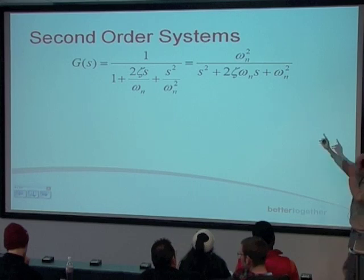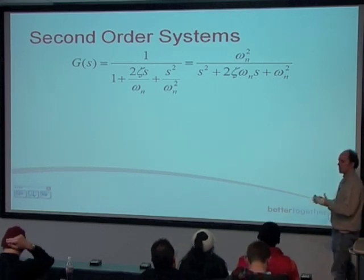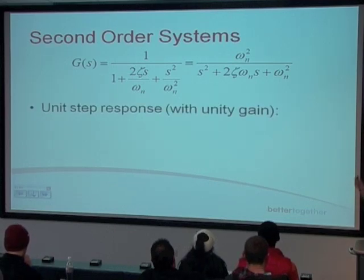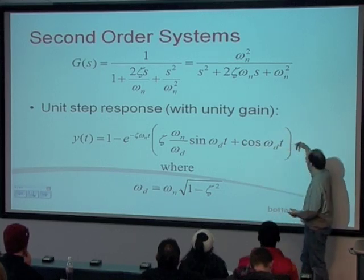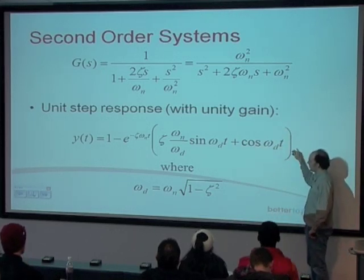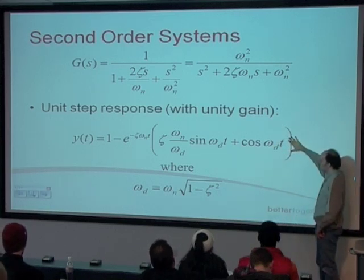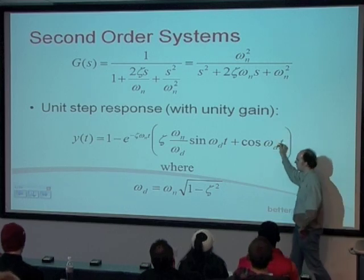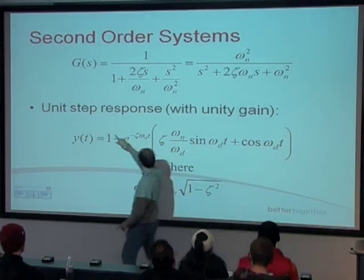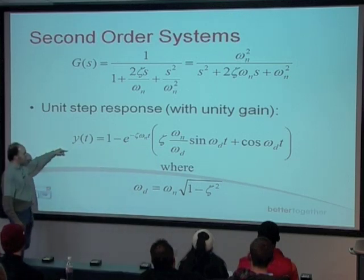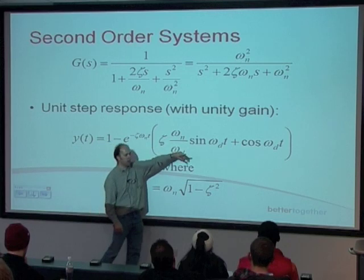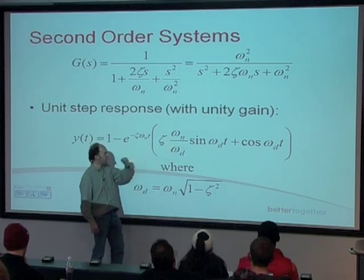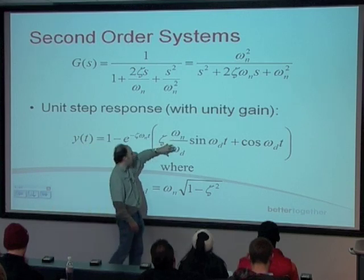So there's our second order system — that was the equation from the previous slide. I'm going to give you the standard form for the time response, which is the step response with a gain of one — I'm not going to go through the derivation. This will be on your equation sheet so you don't need to worry too much about remembering it. With a unit step response, you have a step that goes up to one and then levels off. The response consists of one minus some exponential terms — a decaying exponential multiplied by a sinusoid with sine and cosine terms and various constants.